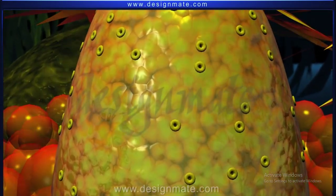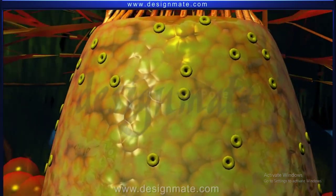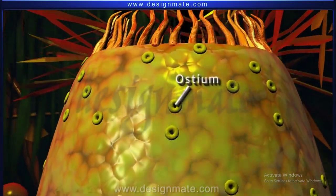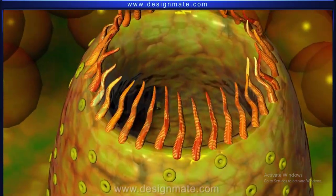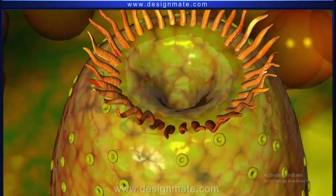They have no organ system and are characterized by numerous pores called Ostia. The body has a central mouth-like opening called the Osculum.